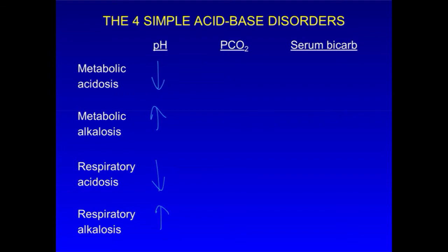As we look at the arterial pH, PCO2, and serum bicarbonate, note that for the metabolic disorders, the primary disturbance is a change in serum bicarbonate concentration, which decreases in acidosis and increases in alkalosis.